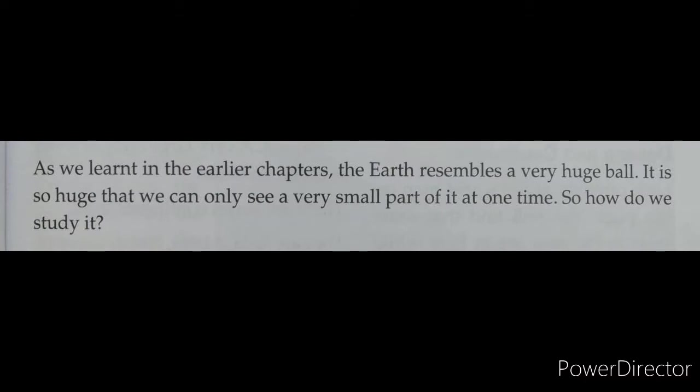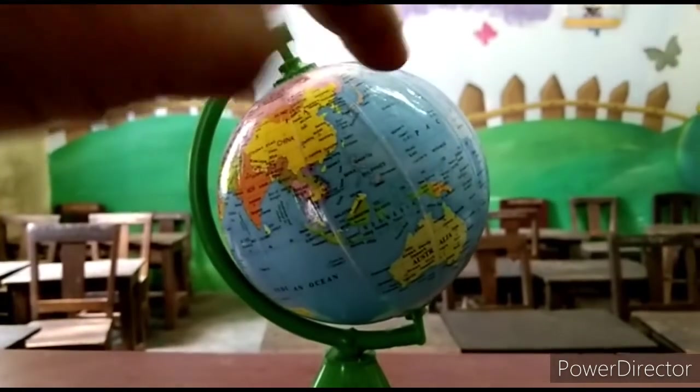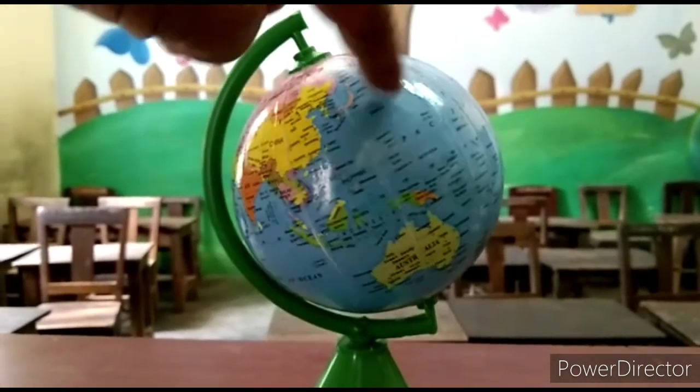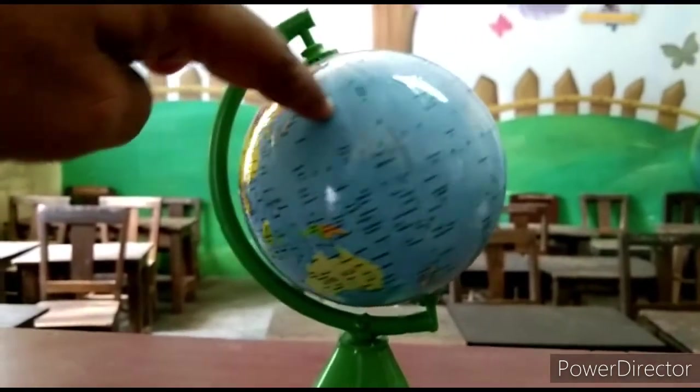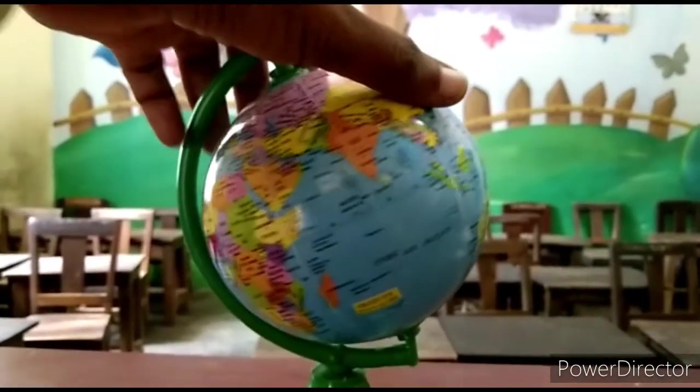As we learnt in the earlier chapters, the earth resembles a very huge ball. It is so huge that we can only see a very small part of it at one time. If you see the globe, you cannot see the full globe at one time — you can only see one portion at a time.